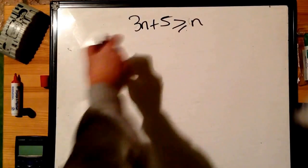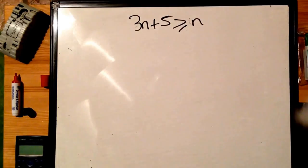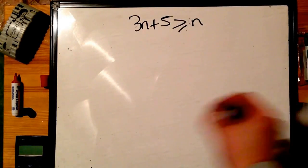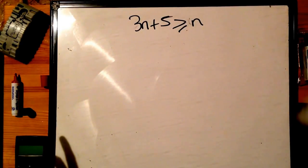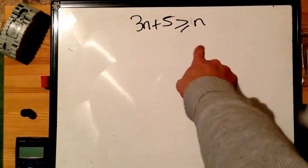All right, we're going to solve this inequality: 3n plus 5 is bigger than or equal to n. We're going to find the solution set, show that solution set on a number line, and work out the smallest integer value that satisfies the inequality.